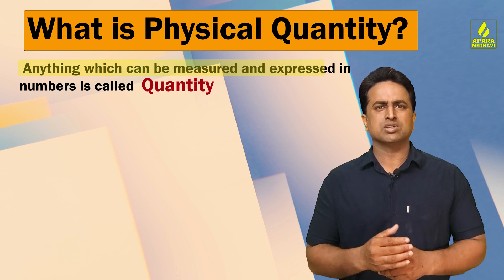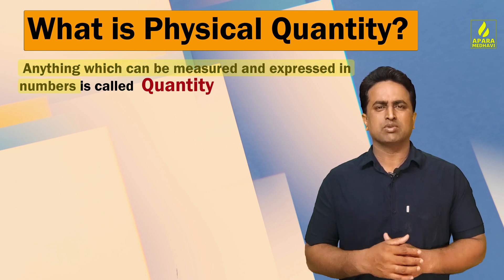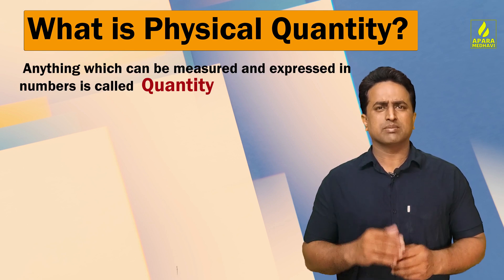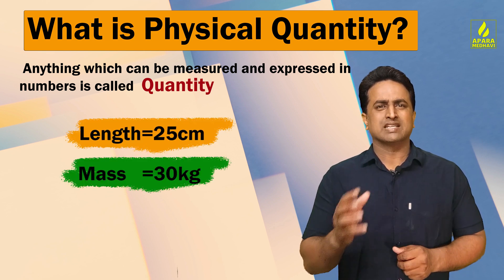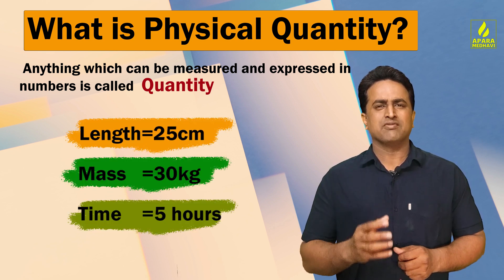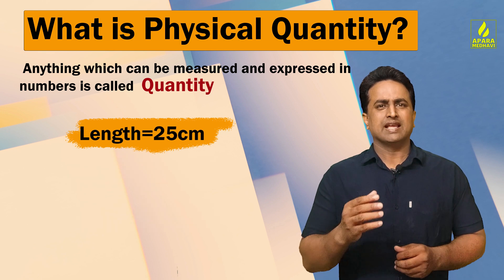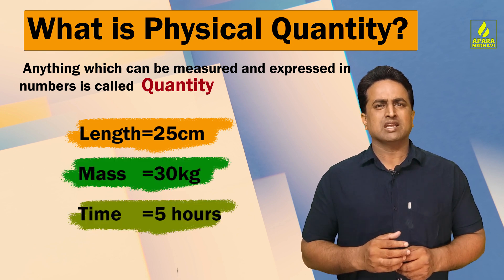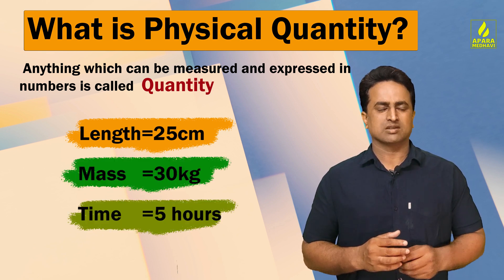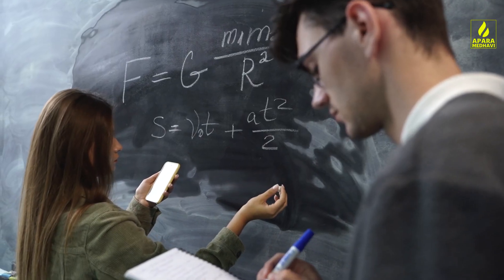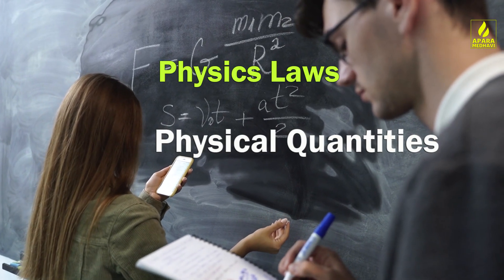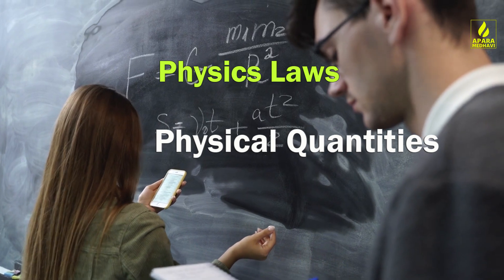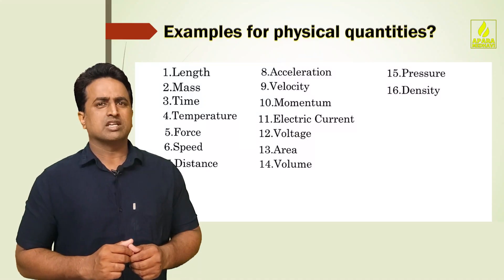Anything which can be measured and expressed in numbers is called a physical quantity. For example: length 25 cm, mass 30 kg, time 5 hours. These are length, mass, time — and these are called physical quantities in nature.